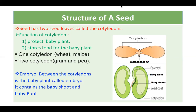Your seed has two cotyledons. The function of cotyledon is to protect the baby plant and store food for the baby plant. These are the two important functions of cotyledon. When the plant is growing, it does not have leaves — leaves come after two to three days depending on the species. So cotyledon provides food to the baby plant until leaves develop.